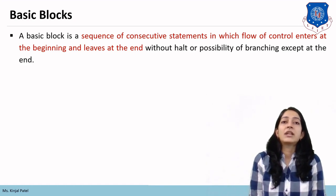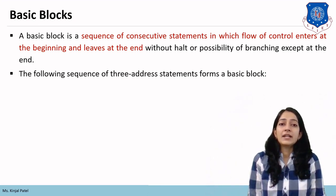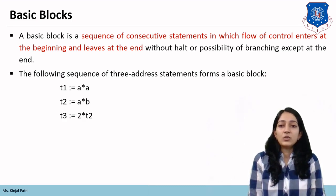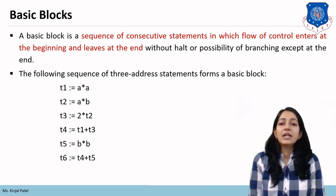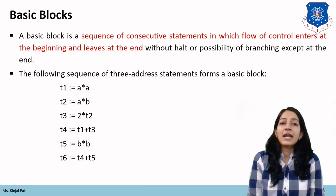There should be no flow of control going toward another statement in a basic block. The following sequence of three-address statements forms a basic block: T1 = a*a, T2 = a*b, T3 = 2*T2, T4 = T1+T3, T5 = b*b, T6 = T4+T5. This sequence forms a basic block because there are no goto statements going toward any other three-address statement.